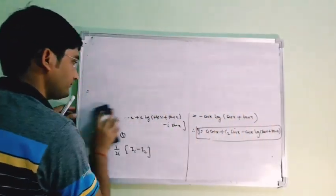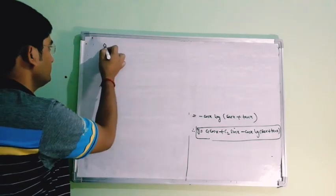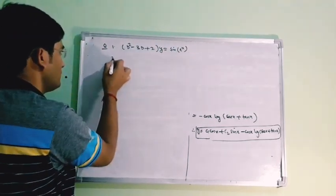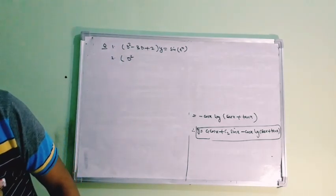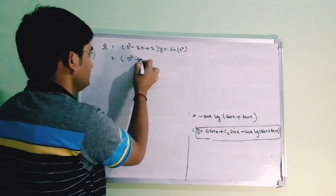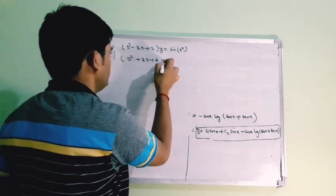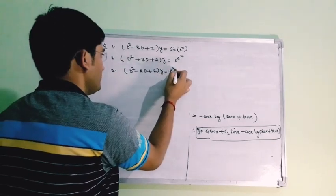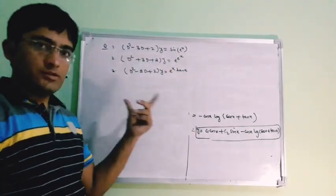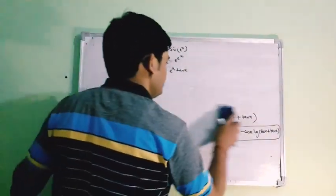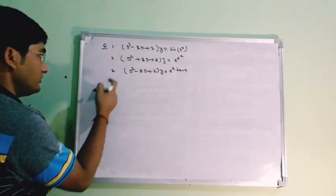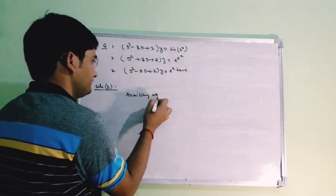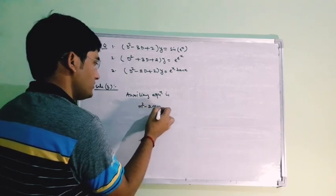Now let us solve another set of questions. The first problem is (D²−3D+2)y = sin(e^x), the second is (D²−2D+2)y = e^(e^x), and the third is (D²−2D+2)y = e^x·tan(x). All three are based on the general method. Let us solve the third problem first.